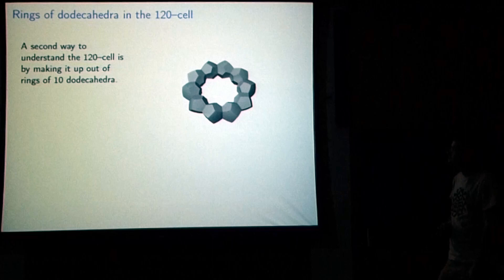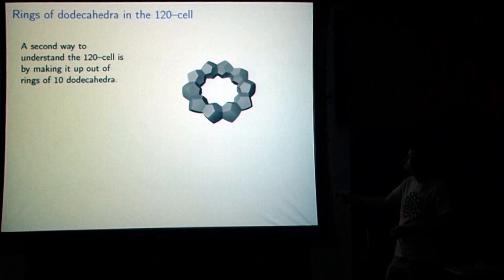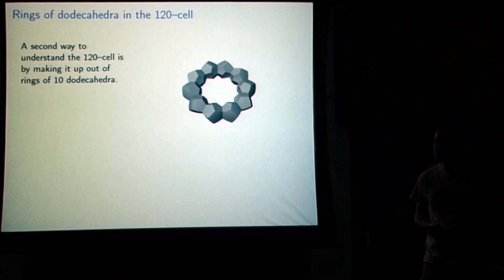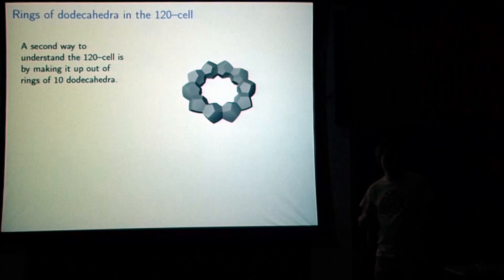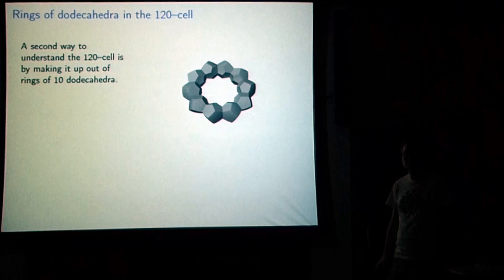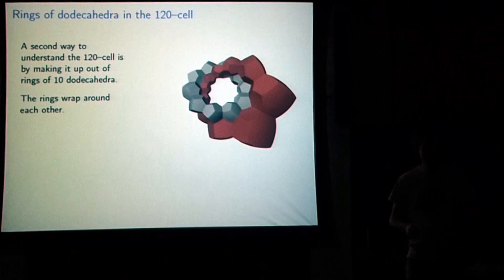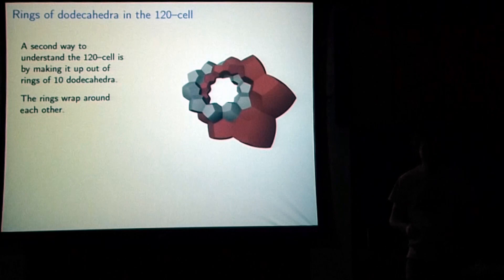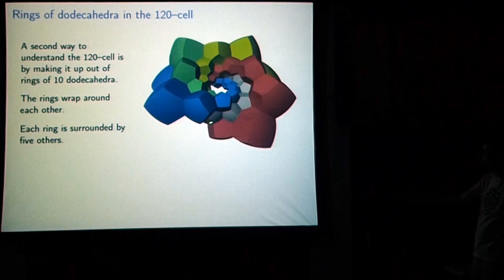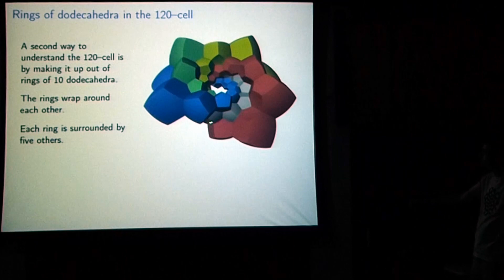Here's another way to understand where the dodecahedra are. You can make a ring of 10 dodecahedra inside the cells of the 120-cell. You start in a dodecahedron, choose a face to exit, enter another dodecahedron, go through the opposite face, and keep going. After visiting 10 dodecahedra, you get back to your start. Then starting in a neighboring dodecahedron in the same direction, you find another ring of 10 that wraps around the first. You can keep wrapping — in fact, you can find five rings that wrap around the central gray ring. This is half of the 120-cell: six rings of 10 dodecahedra each.